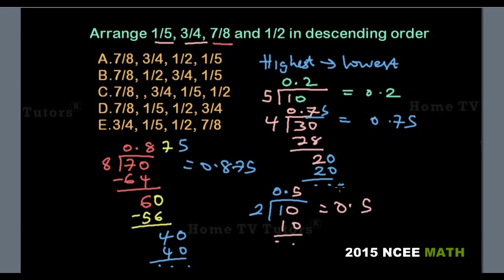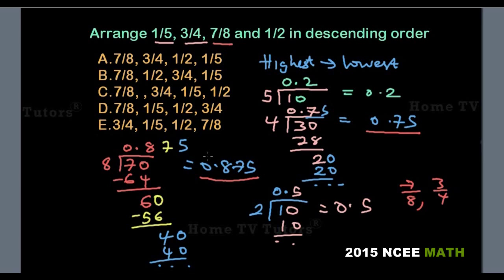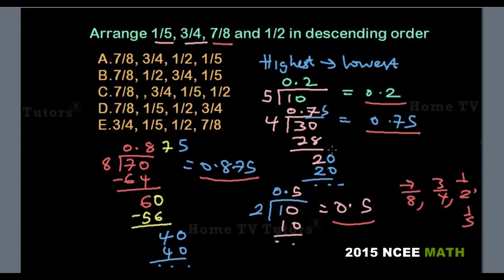If we look at the highest, it is 0.875, which is 7 over 8. Followed by 0.75, which is 3 over 4. Then 0.5, which is 1 over 2. And lastly 0.2, which is 1 over 5. So the answer option A is the right answer.